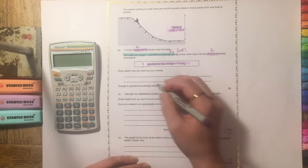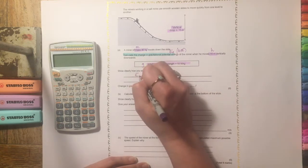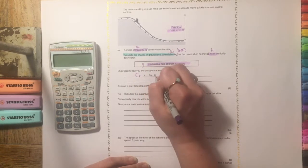So the first thing that personally I would do is I would write out the equation. So Ep equals m, g, h.